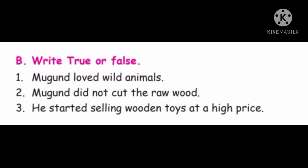Next, write true or false. First question: Muhun loved wild animals. Muhun loved wild animals — true or false? The answer is false, because Muhun's mother was killed in a wild animal hunt, so he hated wild animals. So false.